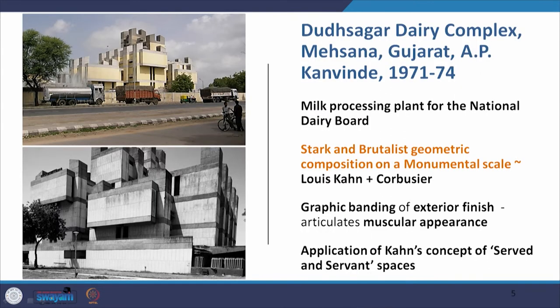Then we have a project that looks nothing like IIM Ahmedabad — it is not in exposed brick, it is a brutalist work. Is it closer to the work of Corbusier? The Dootsagar Dairy Complex, under the National Dairy Development Board (NDDB), is a milk processing plant. You might have heard of Kurien, the person behind what was called the white revolution in India, when milk production really shot up — something closely parallel to the green revolution.